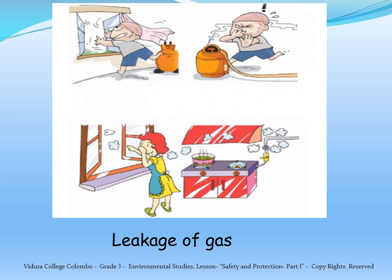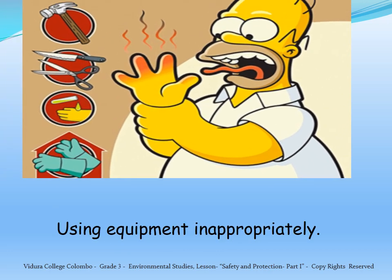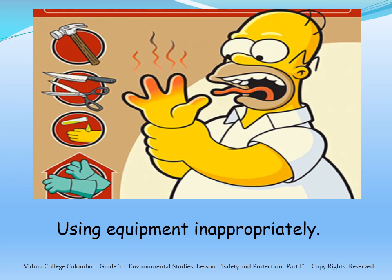Number 2: Leakage of gas. This is one of the dangerous accidents that can happen at home. Whenever you feel the smell of gas, you can open the doors and windows to avoid the danger. Number 3: You should be very careful when using sharp objects such as knives and scissors. If you are using them inappropriately, you will meet many accidents.